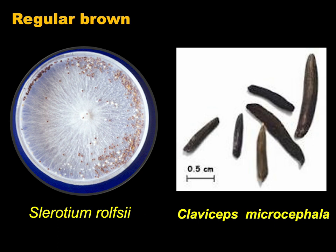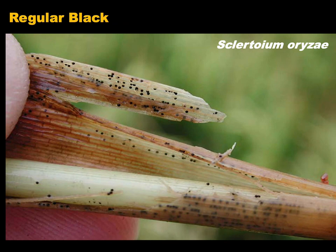Here are photographs of regular brown sclerotia produced by Sclerotium rolfsii in artificial media. These are sclerotia produced by Claviceps microcephala, which are also regular and brown in color, but their size is larger compared to those of Sclerotium rolfsii. In this photograph, I want to show some regular black sclerotia which appear on the plant surface just like black dots — these are sclerotia produced by Sclerotium oryzae in field conditions.